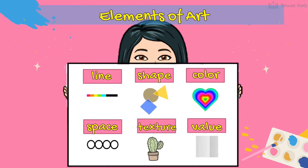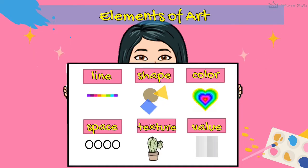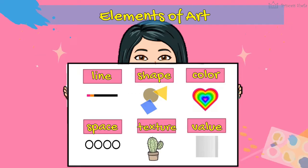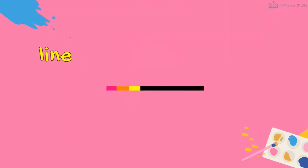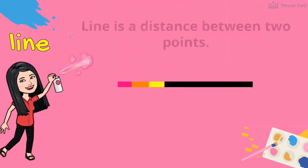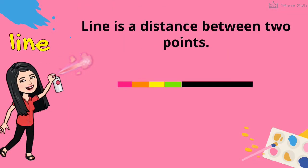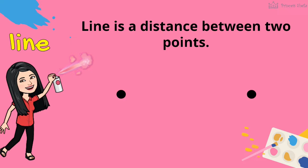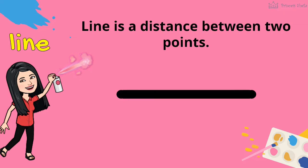Once you have a handle on these seven visual elements, it's even easier to create your own art. The first is line. Line is a distance between two points. When you connect the two dots, you make a line.